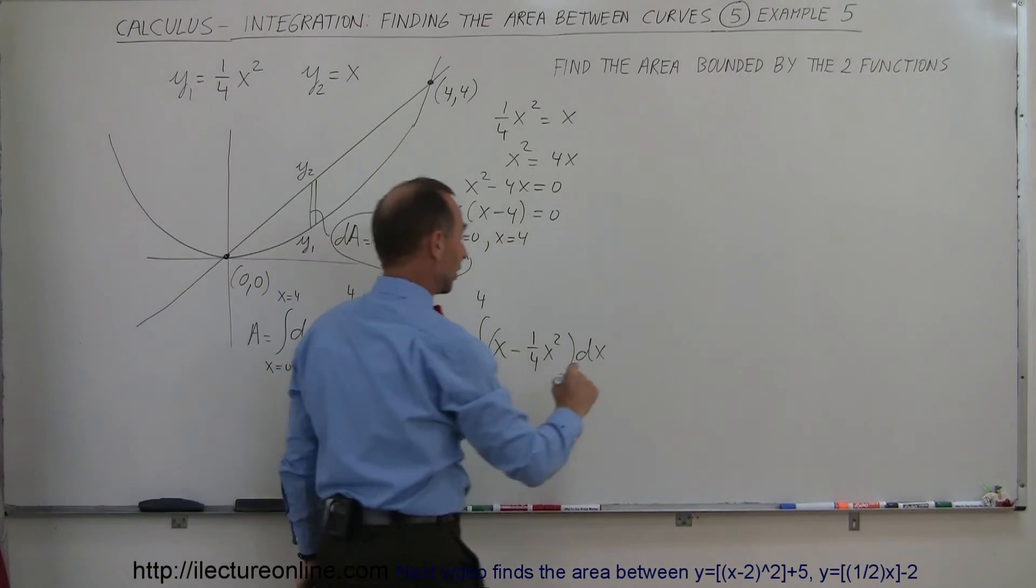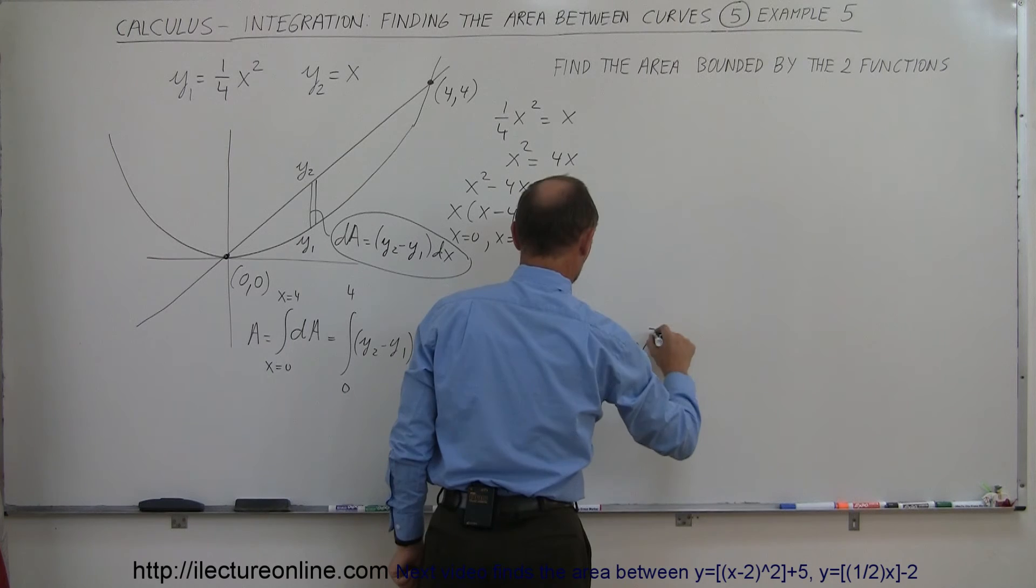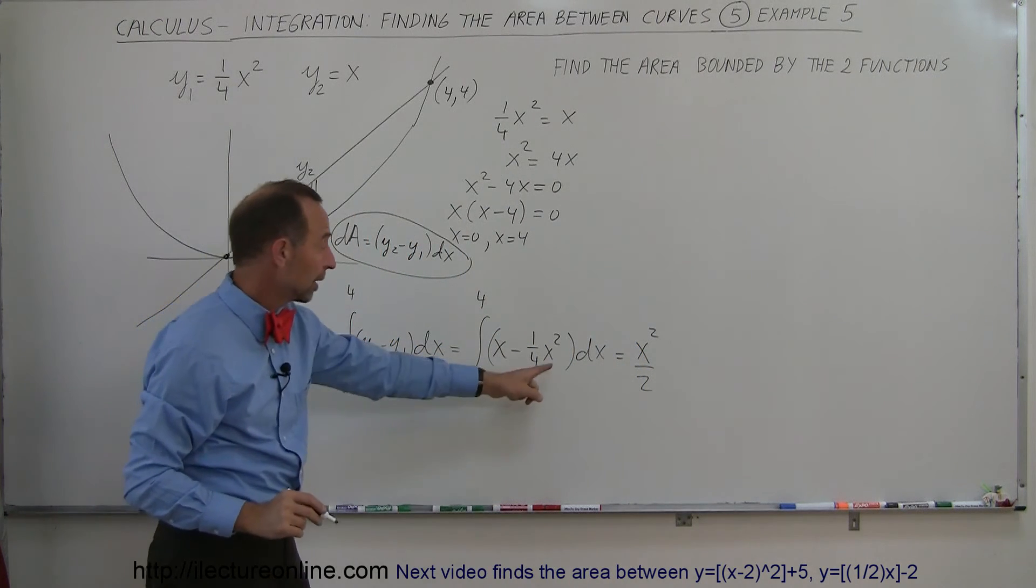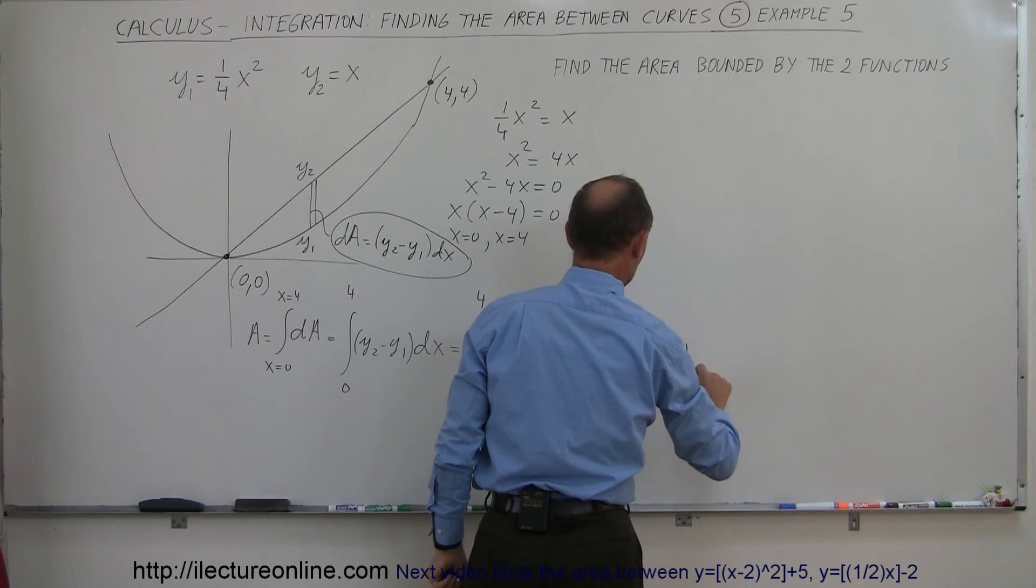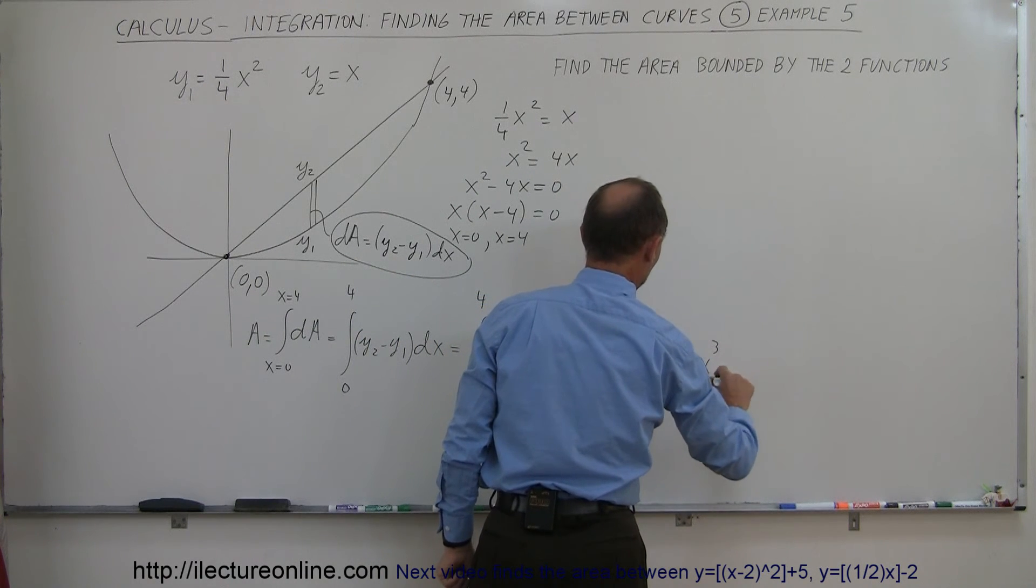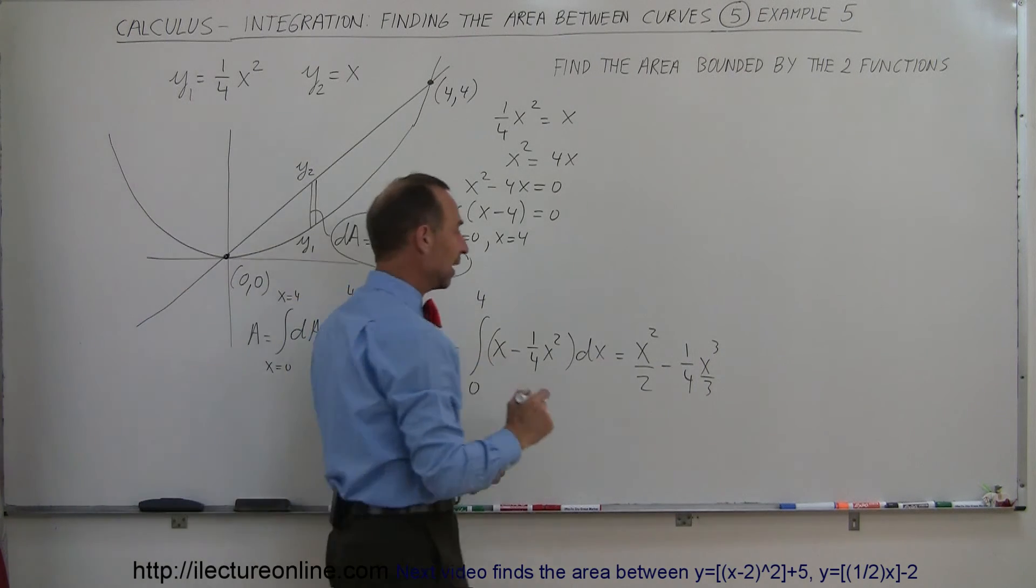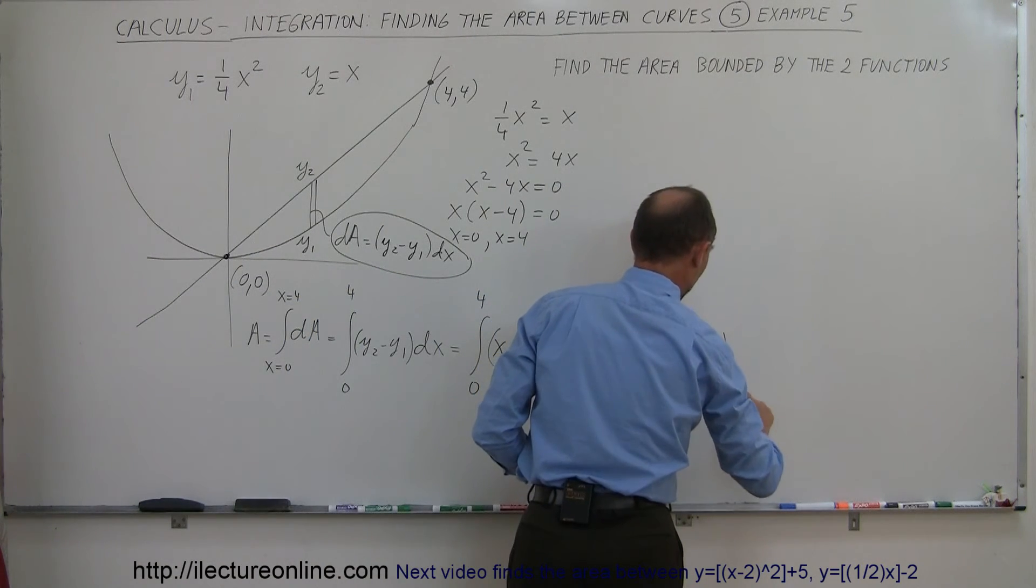When I integrate this, I get x squared over 2. When I integrate this, I get minus 1 quarter x cubed over 3. Again, I add 1 to the exponent, divide by the new exponent, and I evaluate it from 0 to 4.